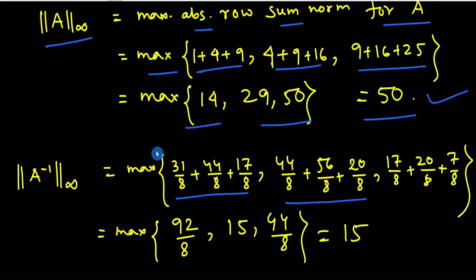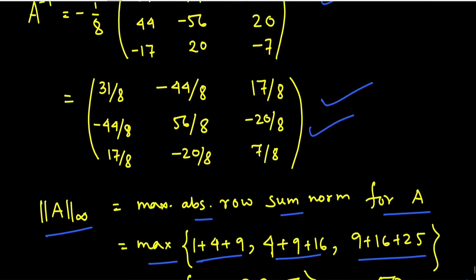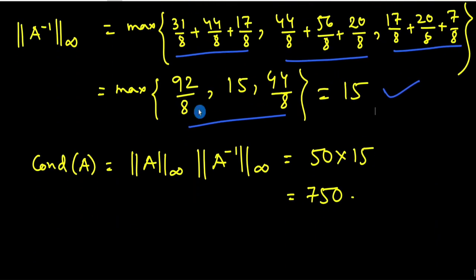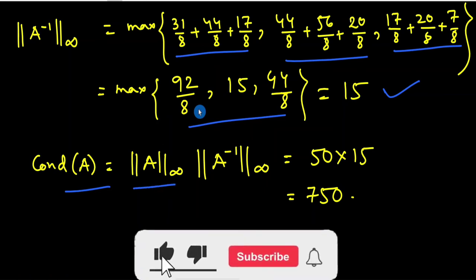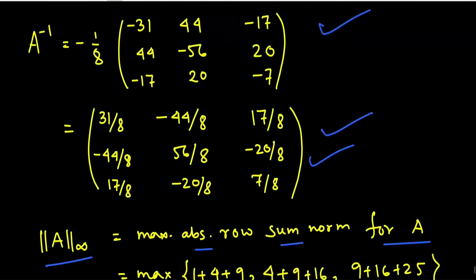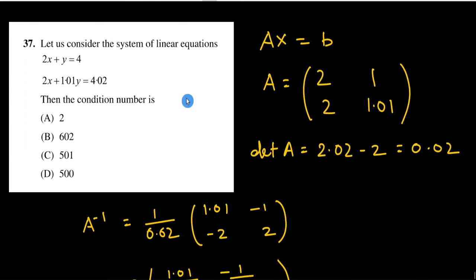Taking the absolute values of elements of the first, second, and third rows of A inverse and summing them, we get the maximum of three values. The maximum equals 15. Therefore cond(A) = norm∞(A) × norm∞(A inverse) = 50 × 15 = 750. So 750 is the correct condition number for this matrix.